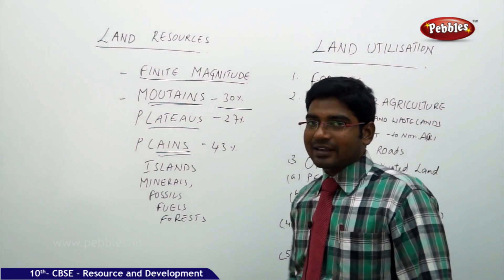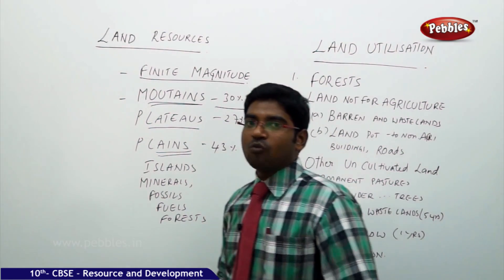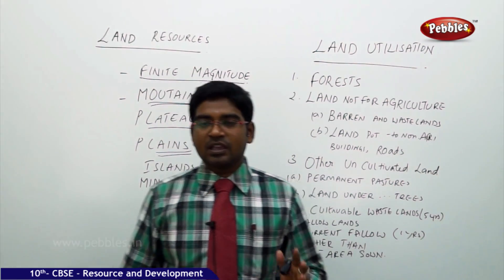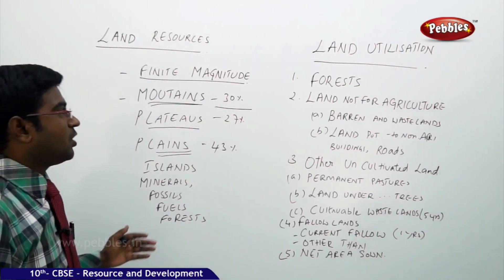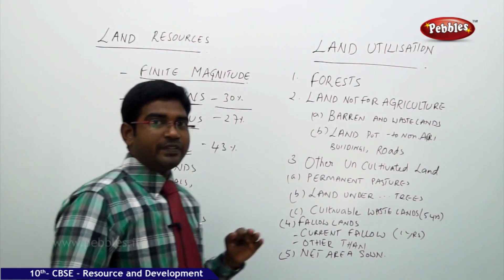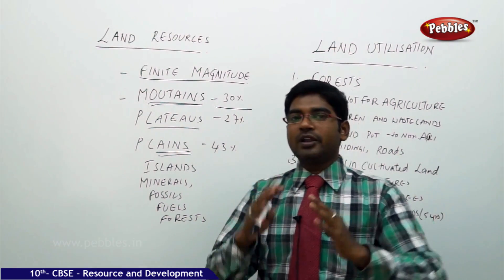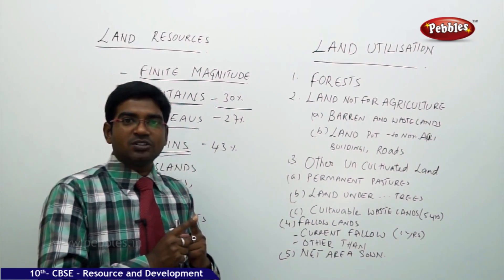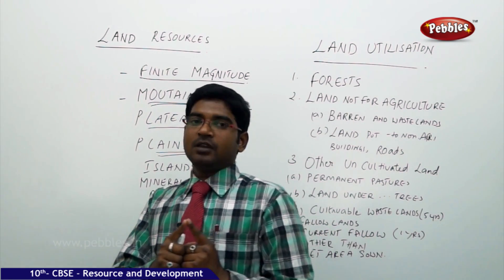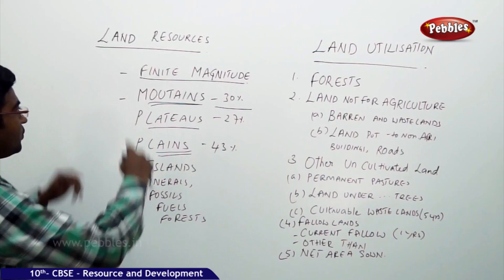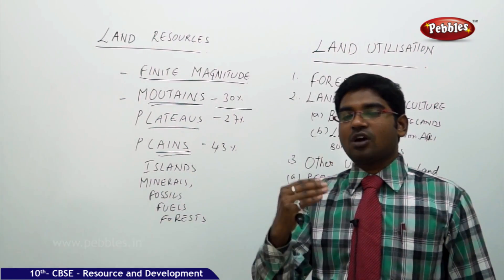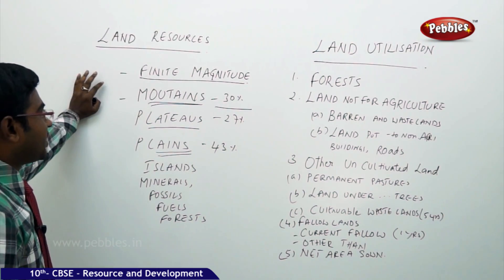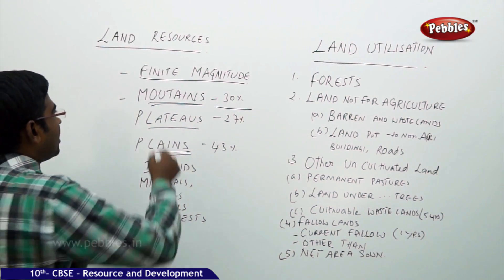Now in order to understand exactly how we use the land and what are the different categories of land use, especially in significance to a particular nation — let us understand how land is utilized. After knowing that land is available in very small quantity compared to water, the entire planet is covered with 70% water and 30% land. We have seen the study of finite magnitude where earth's land is always limited.